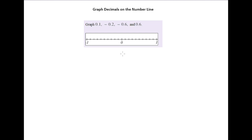To graph these numbers we simply need to count over the appropriate number of tenths either to the left of 0 or to the right of 0. So to graph 0.1 I understand that I'm just going to go over 1 tenth.